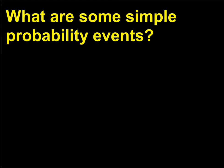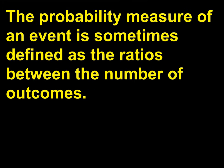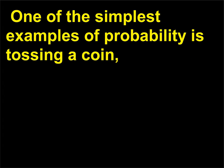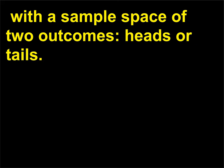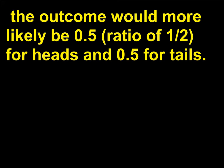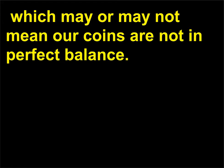What are some simple probability events? The probability measure of an event is sometimes defined as the ratio between the number of outcomes. One of the simplest examples of probability is tossing a coin, with a sample space of two outcomes — heads or tails. If a coin were completely symmetrical, the outcome would more likely be 0.5 (ratio of 1/2) for heads and 0.5 for tails. As we all know, it never comes out that way, which may or may not mean our coins are not in perfect balance.